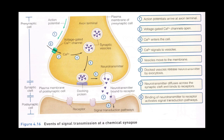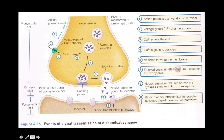Now, as biochemists, we need to add more detail. One important point: the docked vesicles release neurotransmitter by exocytosis, which then diffuses across to the receptor. Another thing not described in detail in the basic steps is the synaptic vesicle fusion — there's a lot more going on there that we need to consider.